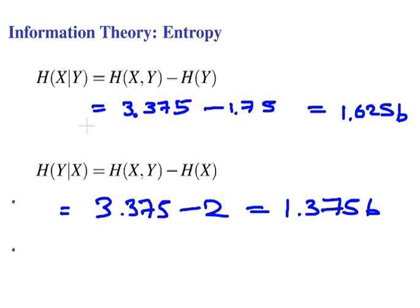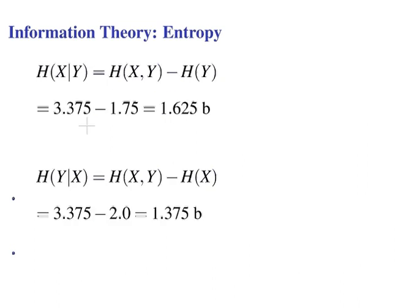Those are our calculations. Straightforward enough, really. There's a tidied up version of that calculation: 1.625 bits and 1.375 bits. Those are the first two parts of our calculation, of our exercise. Those are our first two exercises taken care of.